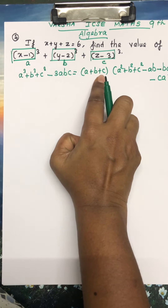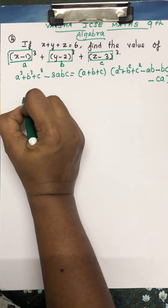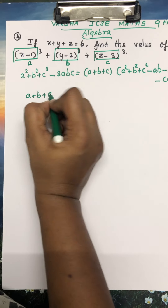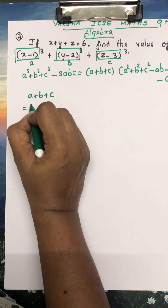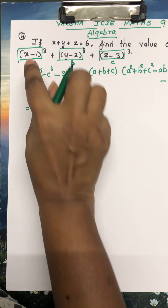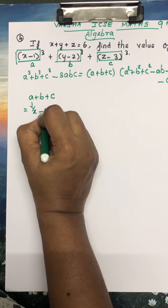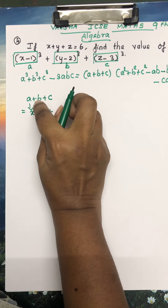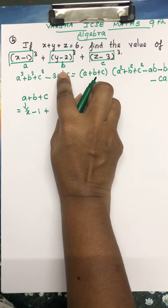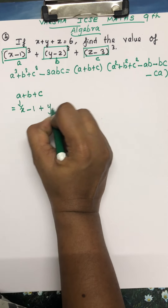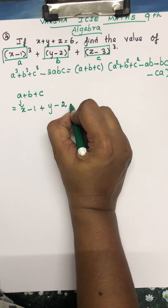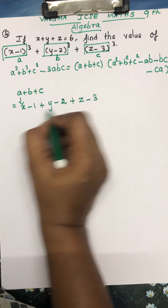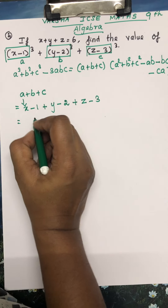In this type of question, we have to find the value of a + b + c first. So, a + b + c = (x − 1) + (y − 2) + (z − 3).